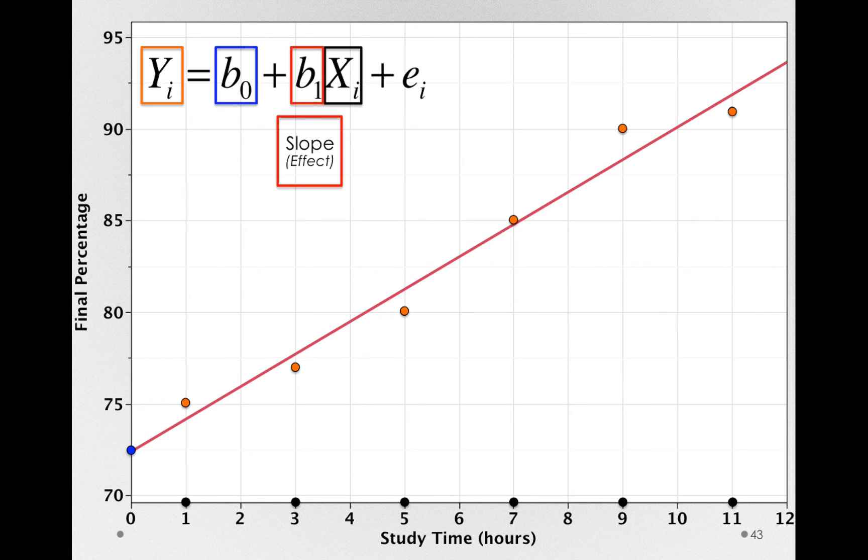Finally, b sub 1, or the slope in our model, is how much more of y we have for every 1 unit of x. Let me actually draw in 1 unit of x here, so 5 to 6 hours, and notice that the line is higher by a particular amount. In fact, if I draw to the left, our line is higher by the amount of b1. That's simply what that model term does. For every 1 more hour of study, this line will be higher by the amount of b1.